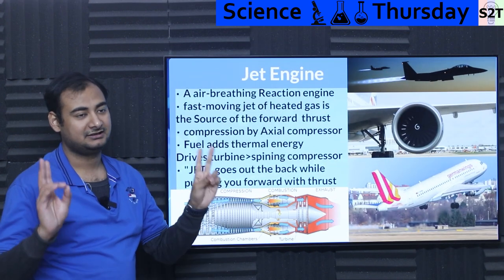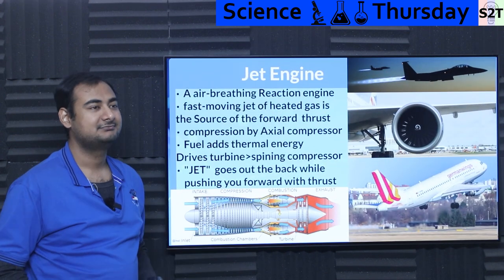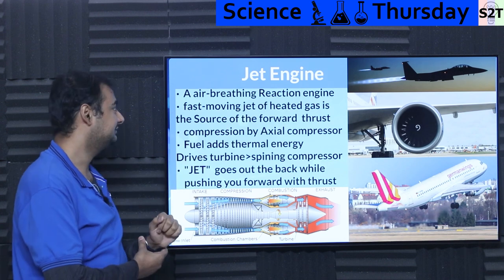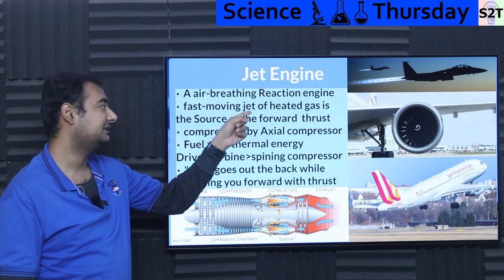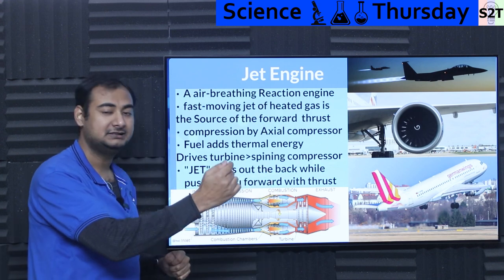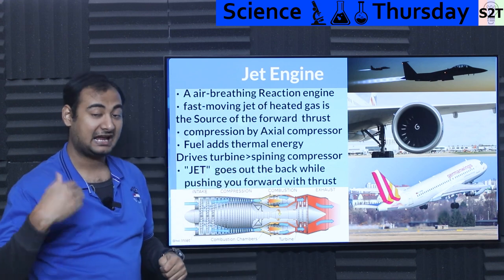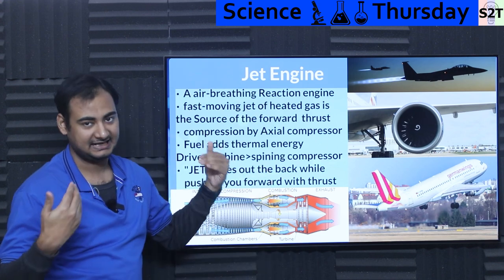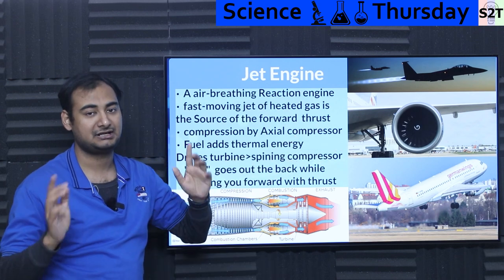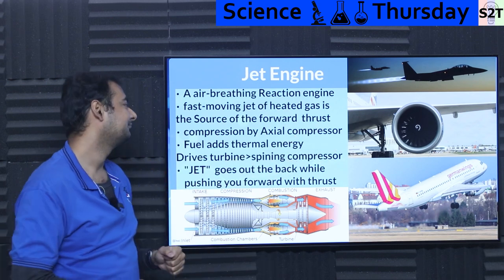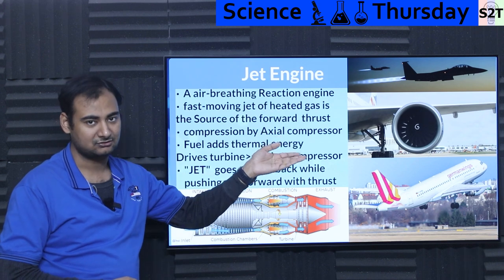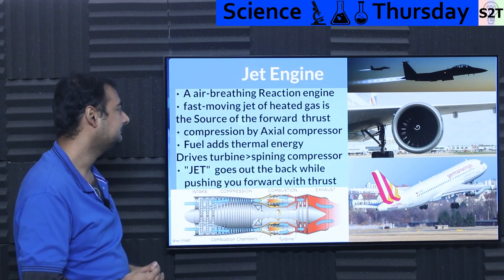Before we understand ultra bypass turbofan, we have to understand what exactly is a jet engine. A jet engine is what we call an air breathing reaction engine, meaning it throws stuff out of the back. That's how it can push — action equals reaction. It's exactly like a rocket engine, that's why jet engines and rocket engines are measured in exactly the same units. Being air breathing, this just cannot go in a vacuum. That's the whole difference.